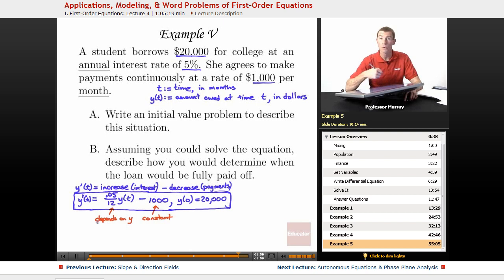The more she owes, the more interest builds up. And so at the very beginning of the loan, she's building up a lot of interest. Then later on, as she gets some of it paid off, she won't be building up interest so fast. So the second part of the problem here says, assuming you could solve the equation, describe how you would determine when the loan would be fully paid off.